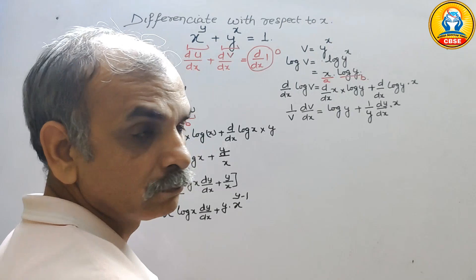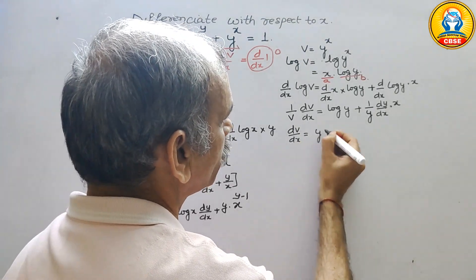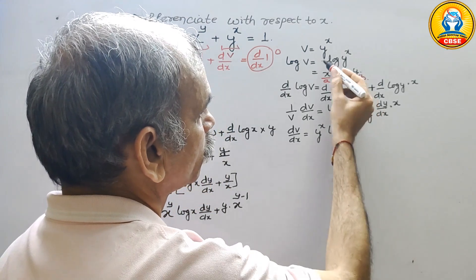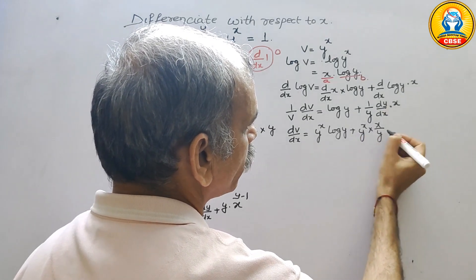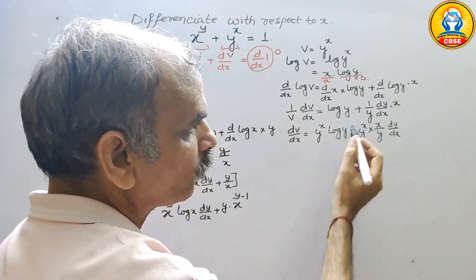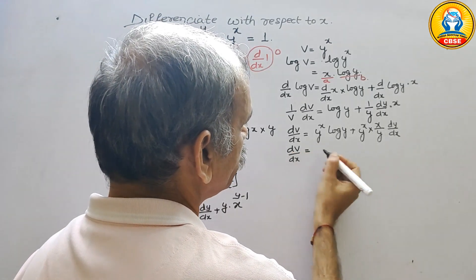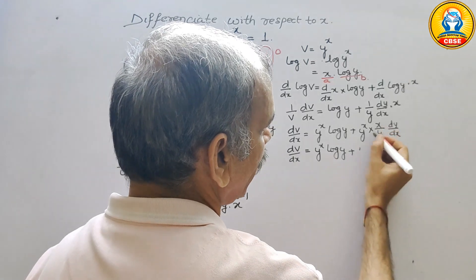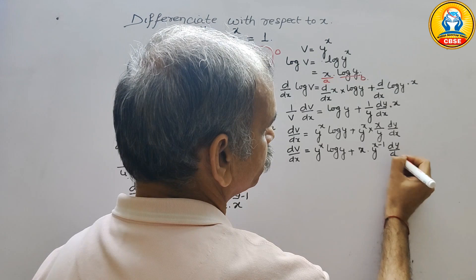Now cross multiplying, dv/dx equals v times the right side, and v is y^x. So dv/dx equals y^x into log y, plus y^x into x/y · dy/dx. Since the base is y, y^x times x/y simplifies to x · y^(x-1). So dv/dx equals y^x · log y plus x · y^(x-1) · dy/dx.